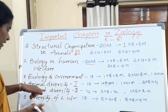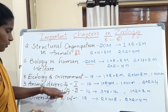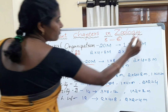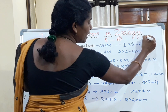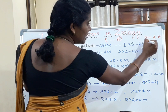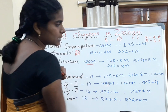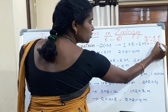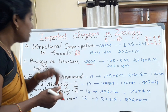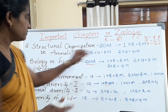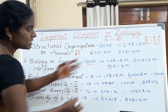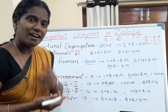Coming to the exam format for Chapter 4 — Animal Diversity: there will be three essay questions given, you should attempt two. For short answers, twelve will be given, you should attempt six. For very short answers, ten are given with no choice, and you should attempt them. From the second chapter, two short answers; from the sixth chapter, two; from the eighth chapter, two — that gives you six short answers.